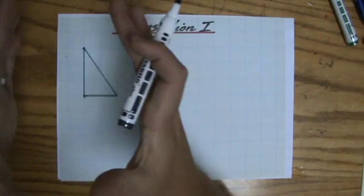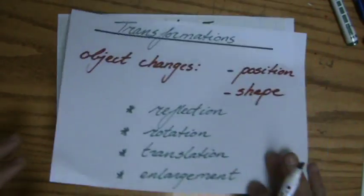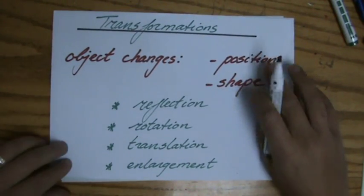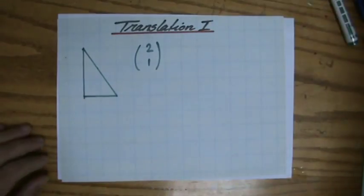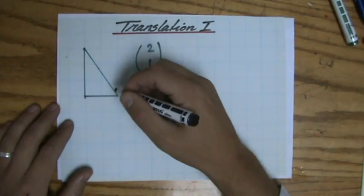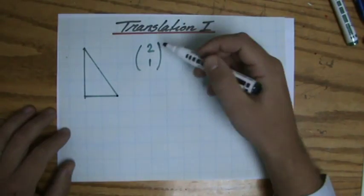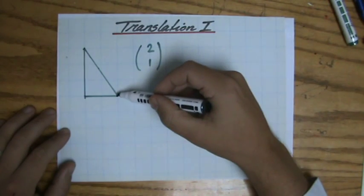Now, a translation is only going to change the position of my object, not the shape. Look, here we go. Let's start with that particular point. Two, one—so that means two